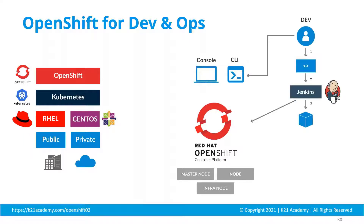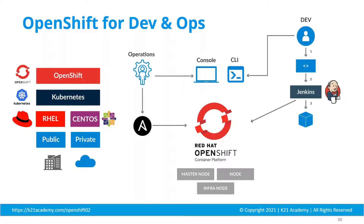Developers can access it through the CLI; the operations team can access it from the console as well as CLI. You can integrate Jenkins and a lot of CI/CD tools with OpenShift. There is a concept called operators — if you want to install something or add any other flavor or plugin, you can do that with the help of operators.